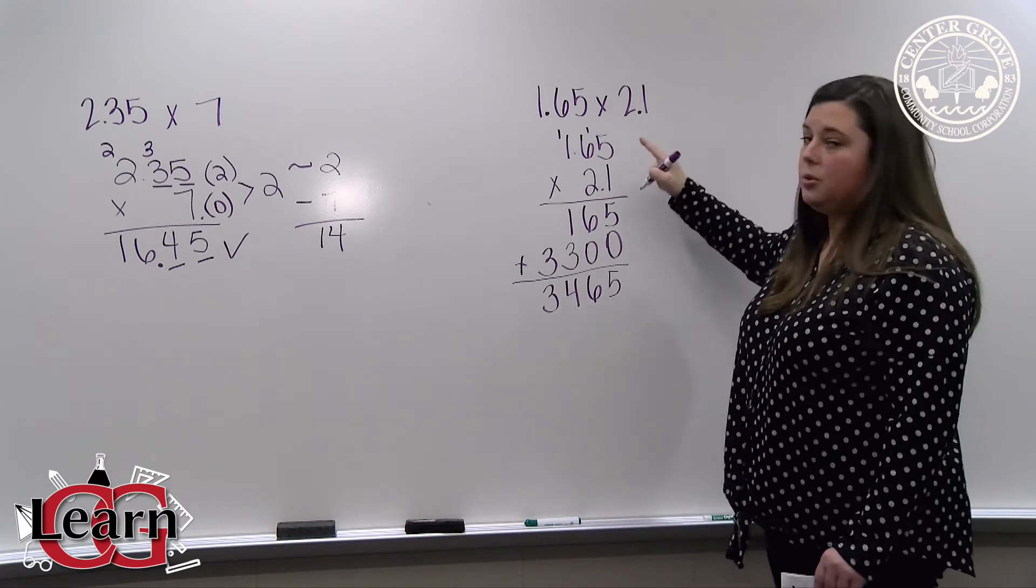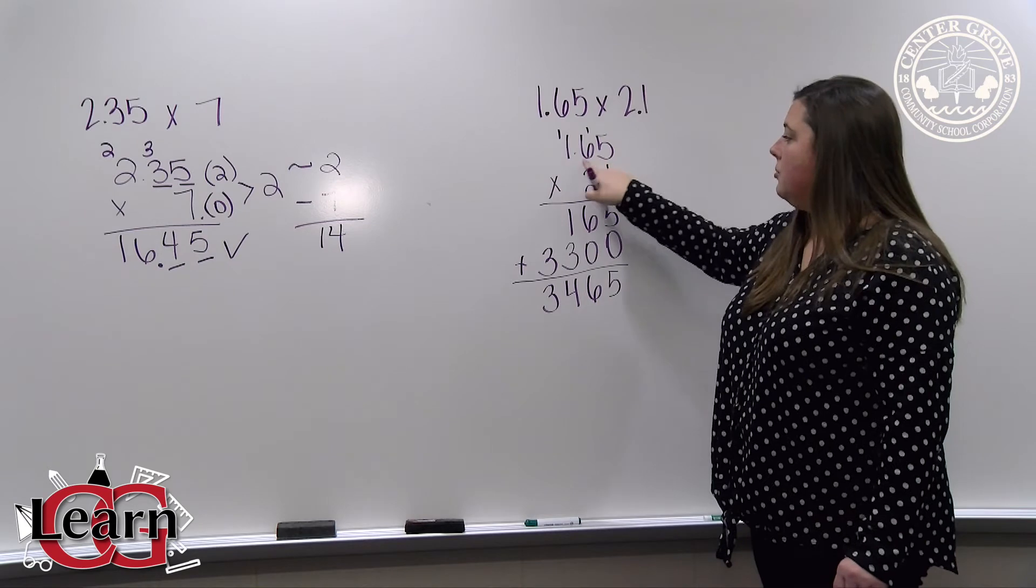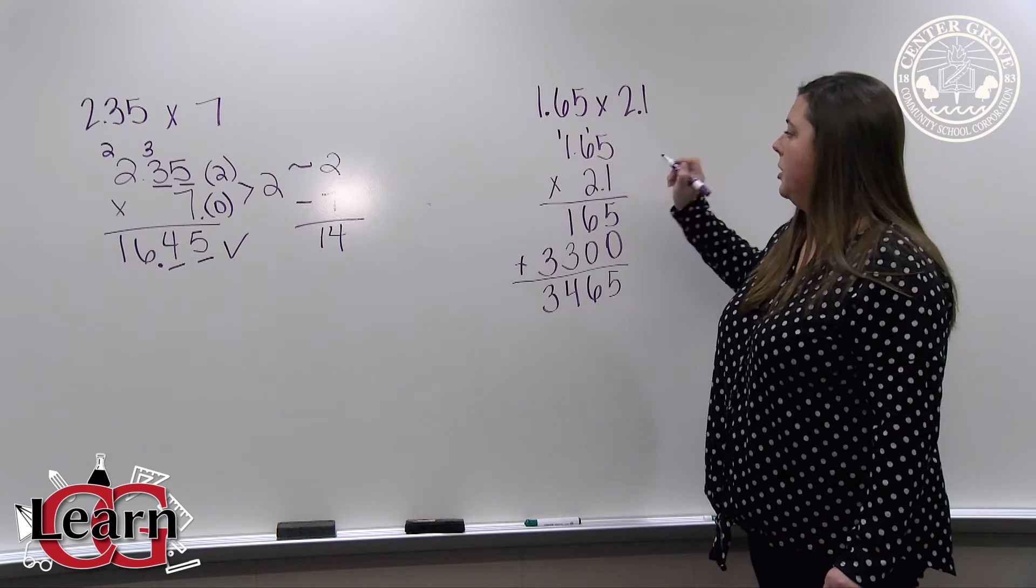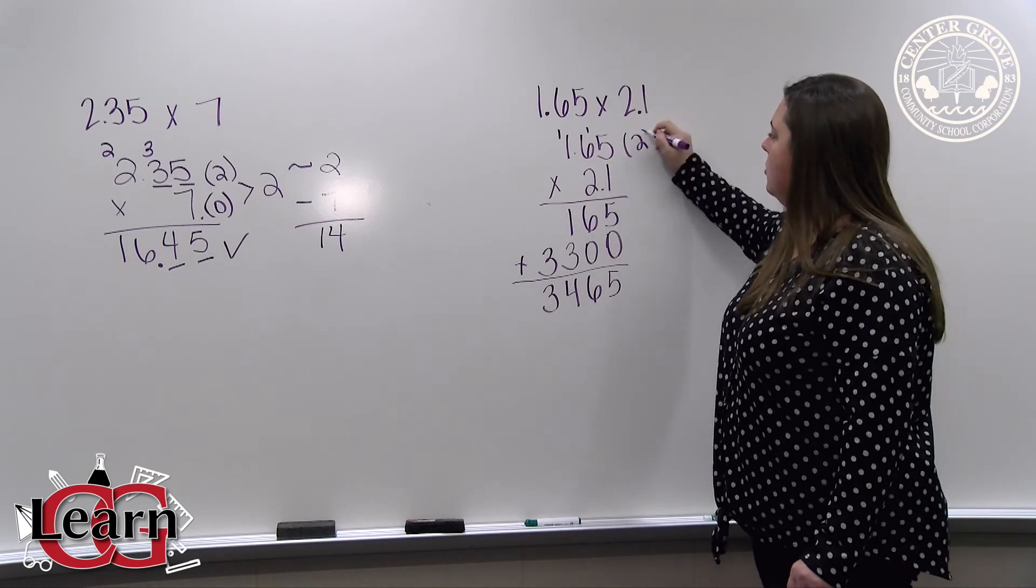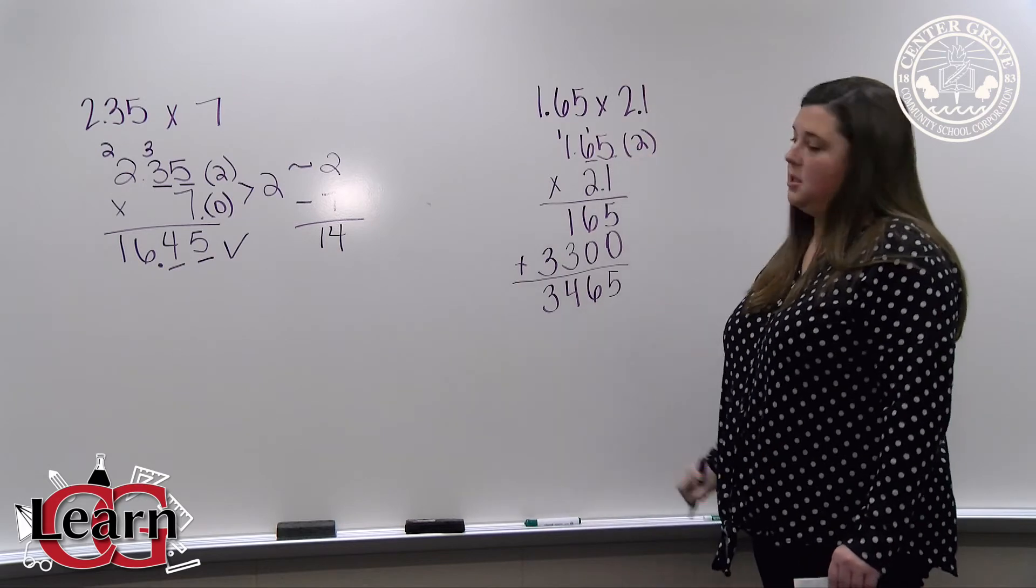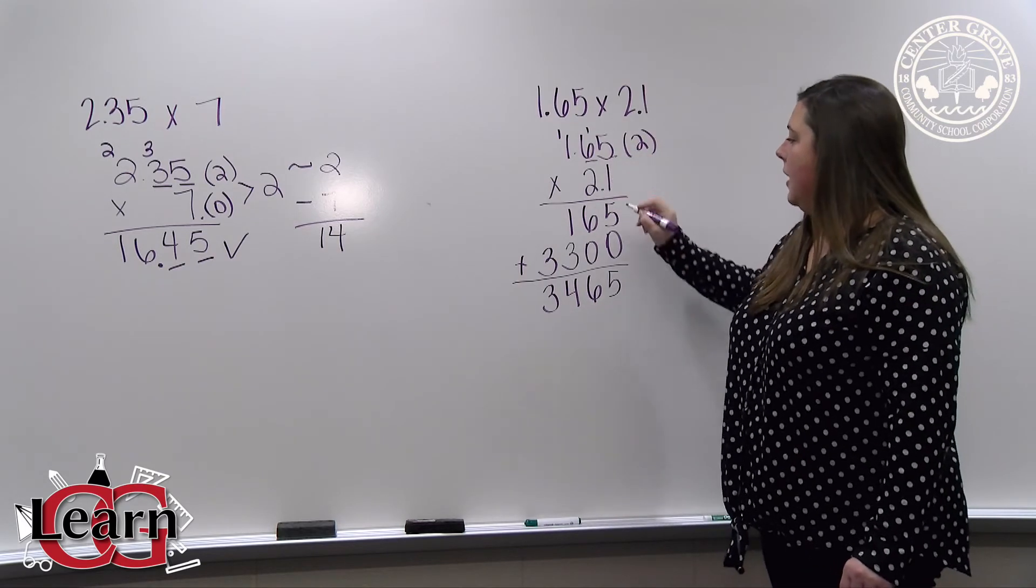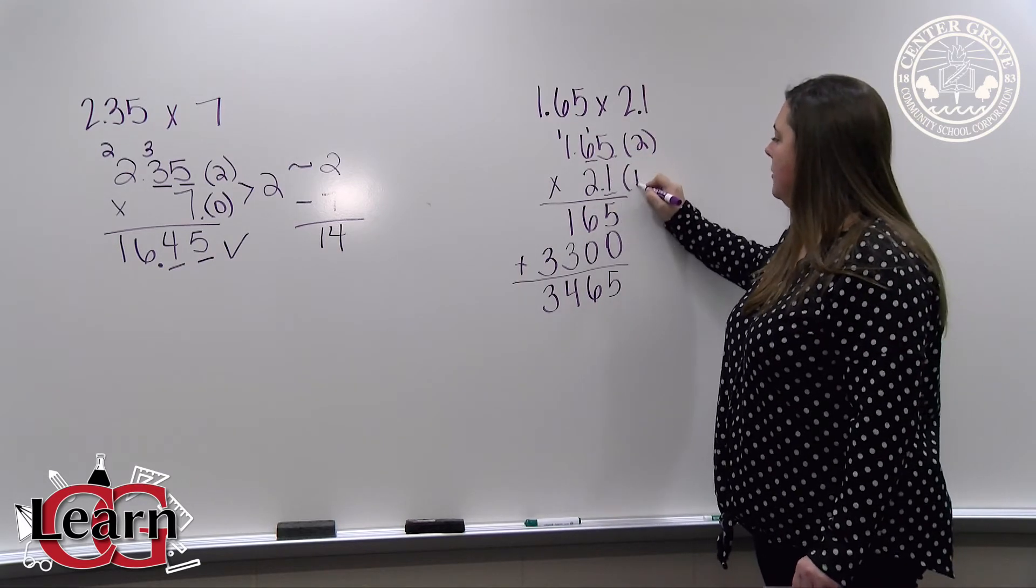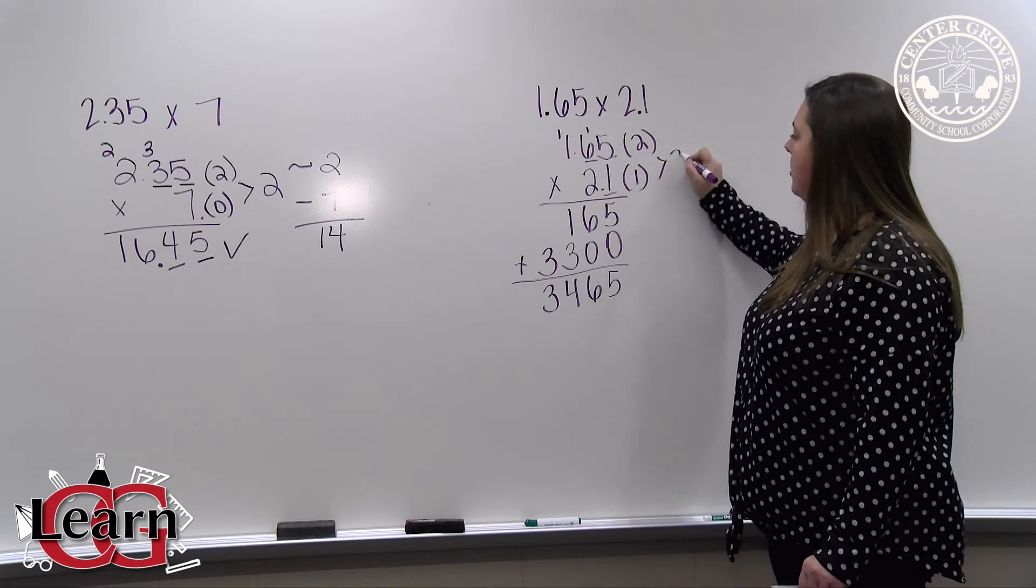Again, we need to record how many digits are to the right of each decimal point. So in our first factor, we have two places to the right of the decimal point. In our second factor, we have only 1. 2 plus 1 is 3.